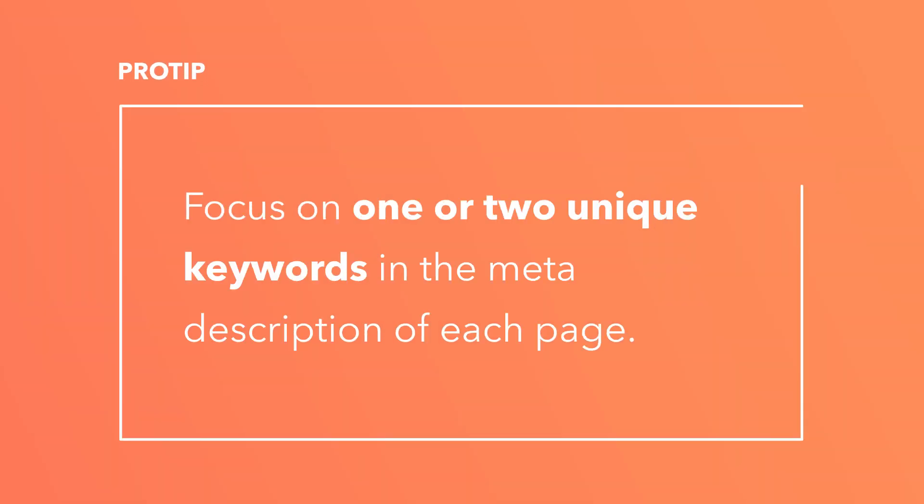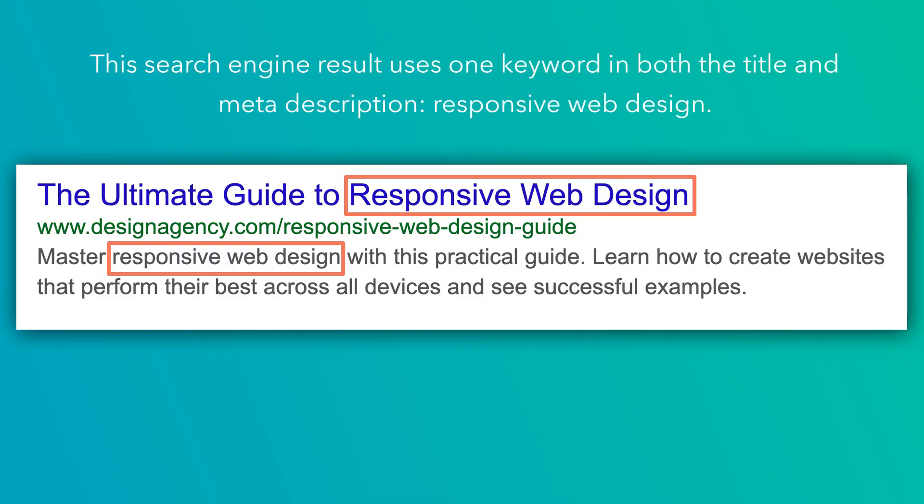You might already include keywords in your webpage's body copy and the title, but the meta description should also include keywords that help describe the content of the webpage. Keywords in your meta description optimize your content to match with related search queries. Focus on one or two unique keywords in the meta description for each page. You don't want to stuff keywords anywhere that you can — make sure that they fit naturally and help explain what people can expect to see if they click on your link. In our example, this search engine result uses one keyword in both the title and the meta description: responsive web design.